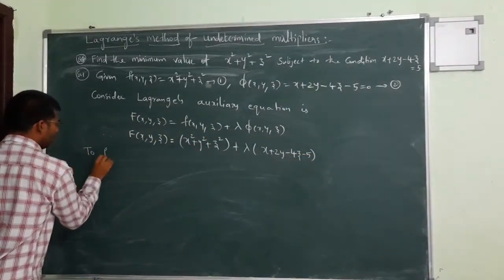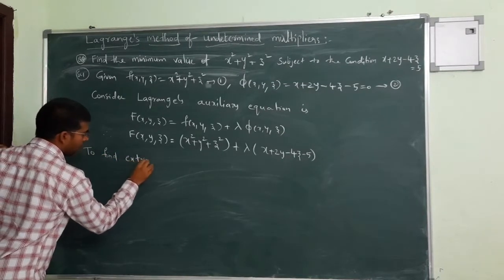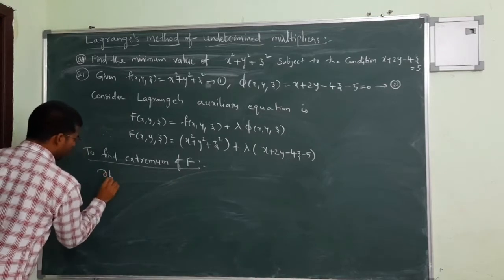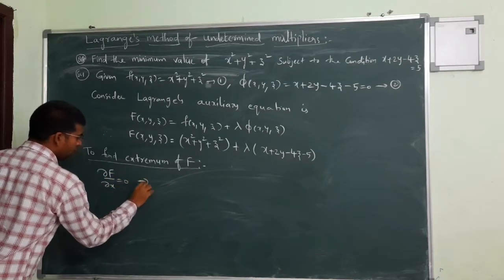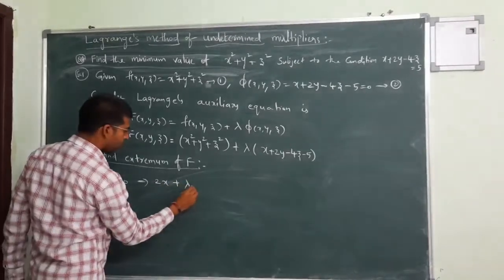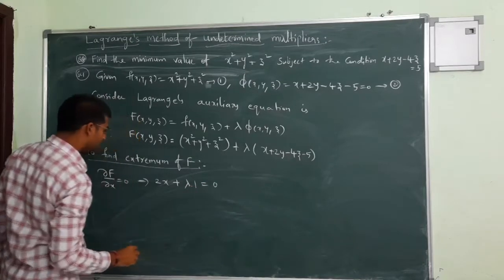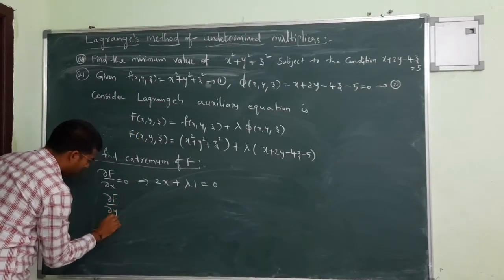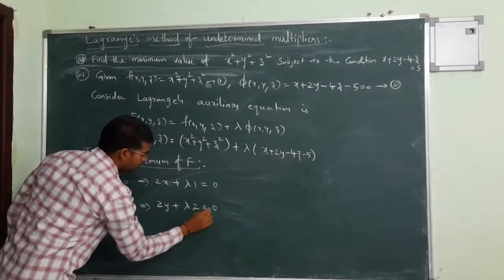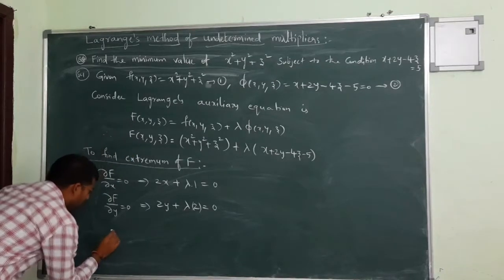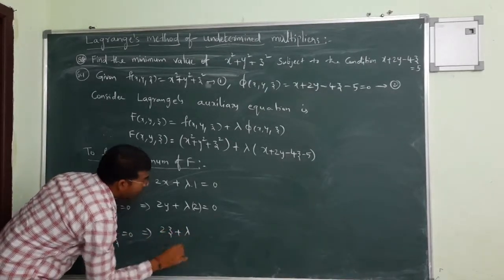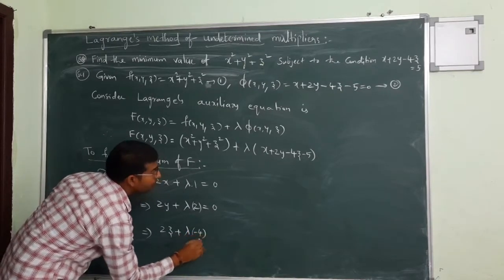To find the extremum of capital F, we have to solve: dou F by dou x equal to 0, which gives 2x plus lambda into 1 equal to 0. Next, dou F by dou y equal to 0, and dou F by dou z equal to 0, which gives 2z plus lambda into minus 4 equal to 0.